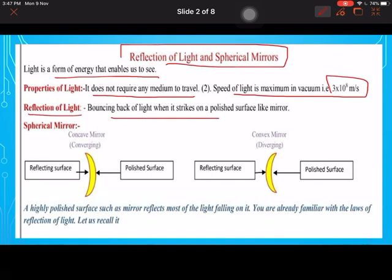When we say reflection of light, it is bouncing back of light when it strikes on a polished surface like a mirror. So we are going to discuss about two kinds of mirrors: spherical mirrors. One is concave mirror which is known as converging mirror, convex which is known as diverging.